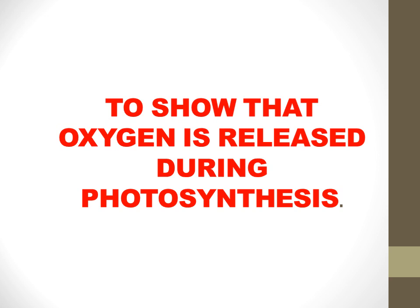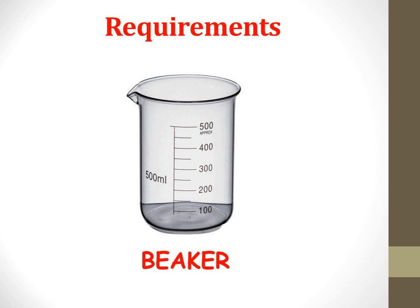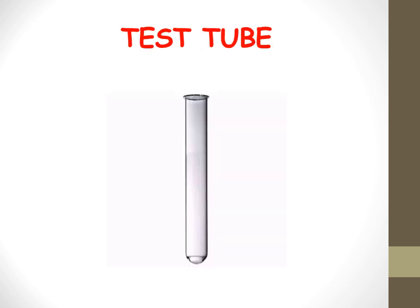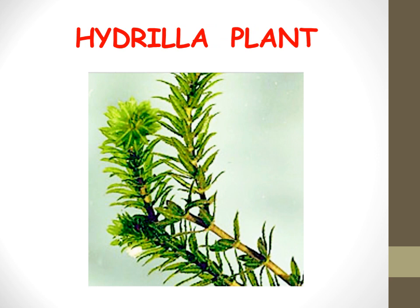Good morning students. We have a new experimental activity to show that oxygen is released during photosynthesis. The requirements for this activity are: first, a beaker; second, a stemmed funnel; third, a test tube, which are the essential requirements; and fourth, a hydrilla plant, which is an aquatic plant.